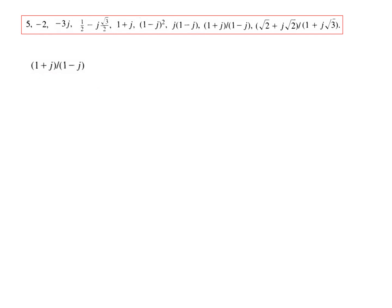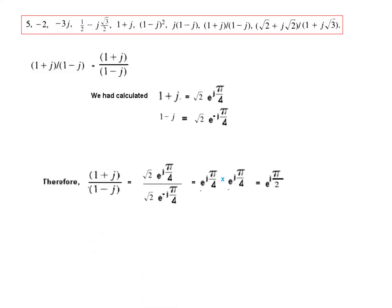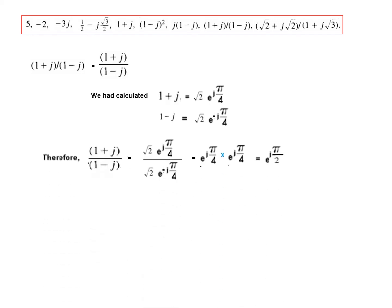Next is 1 plus j divided by 1 minus j. We already have the polar forms of both. Plugging in the values of 1 plus j and 1 minus j, and solving by dividing the magnitudes and subtracting the angles, the final answer is e raised to the power j pi by 2.